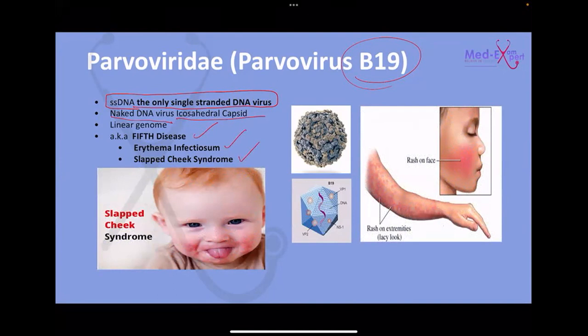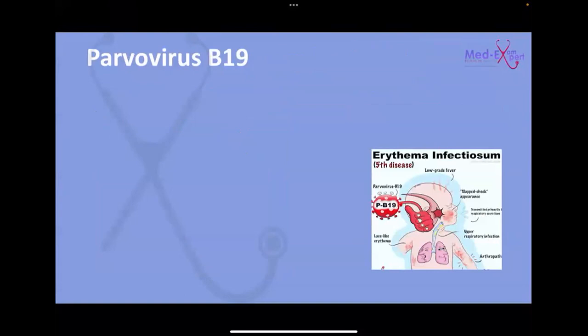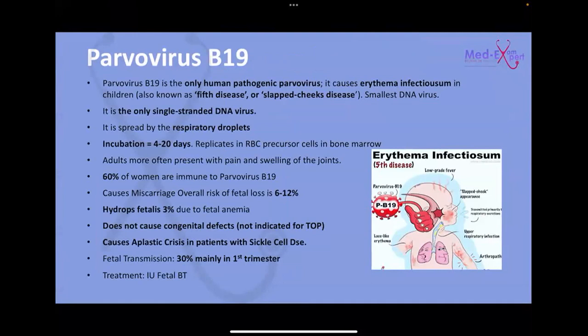Parvovirus B19 presents with a slap cheek facial rash and a lace-like rash on the extremities. When encountering a rash during pregnancy, you should think of parvovirus, rubella, varicella, and cytomegalovirus. Parvovirus B19 is the only human pathogenic parvovirus and causes erythema infectiosum, also known as fifth disease or slap cheek disease.